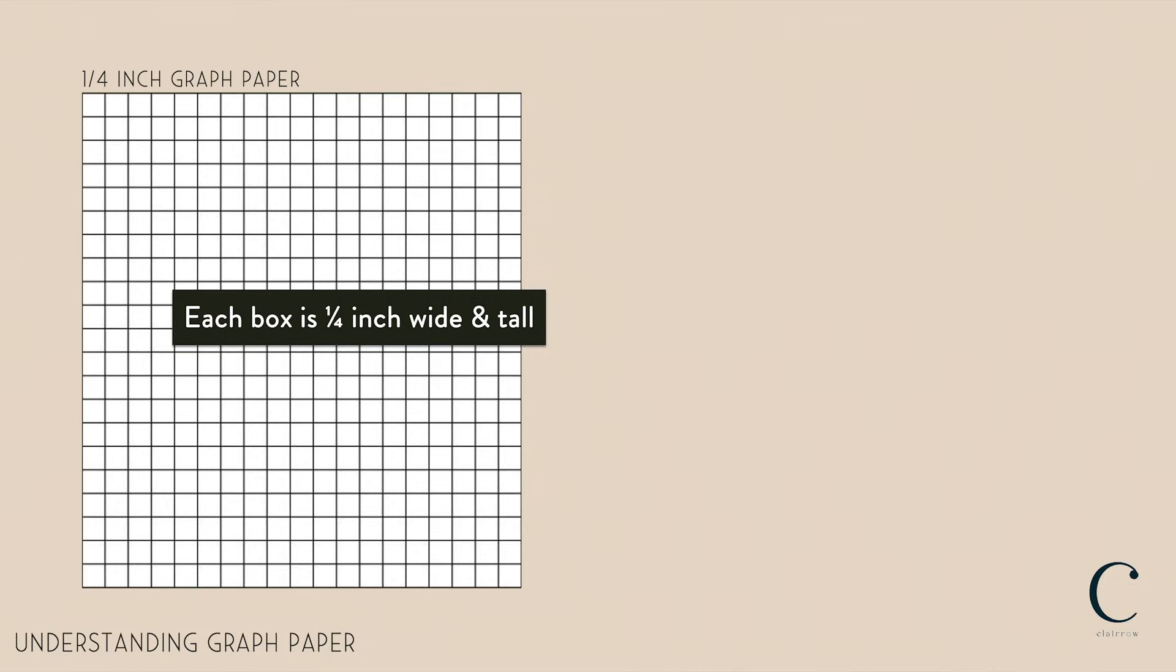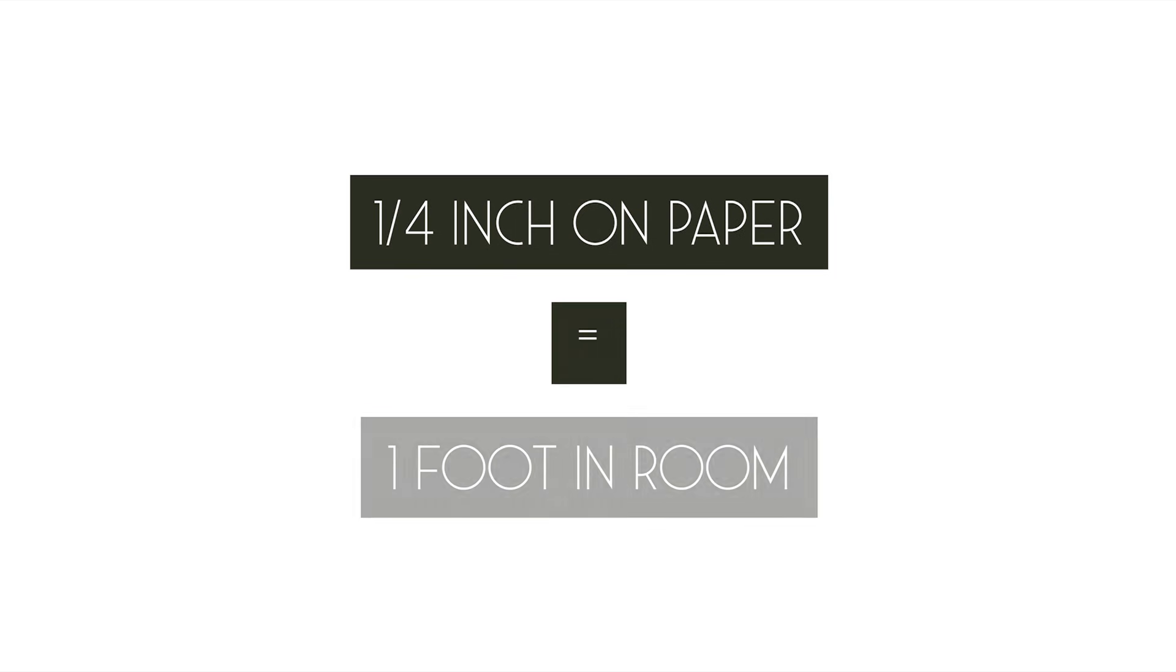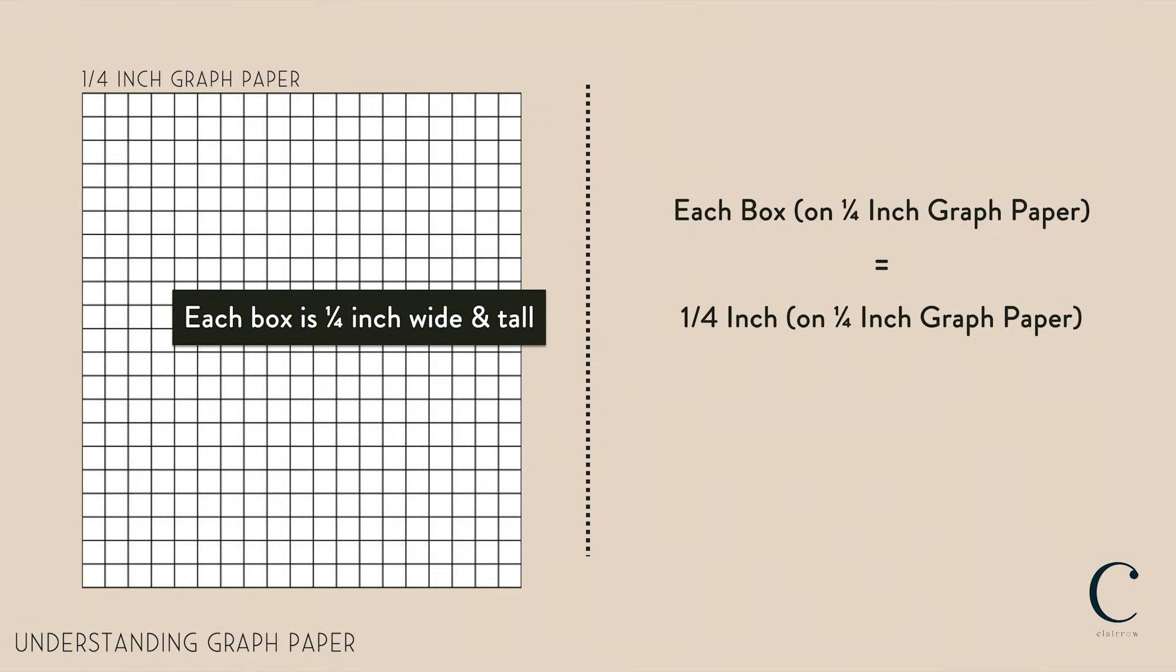Using quarter inch graph paper allows you to draw your room on a quarter inch scale. In the quarter inch scale, a quarter inch on your drawing is equal to one foot in the actual room, meaning each box on the paper represents one foot in your actual room.